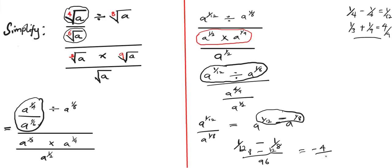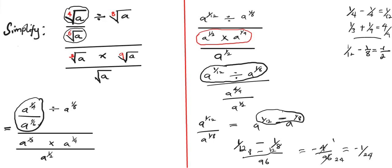We have negative four over 96. Four divides into four once and into 96 twenty-four times, giving negative one over 24. So one over twelve minus one over eight equals negative one over 24. Replacing in the expression, we now have a to the power negative one over 24 divided by a to the power four over nine, divided by a to the power one over two.